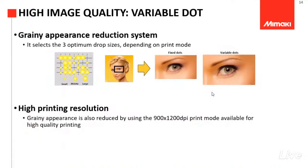Lalu selanjutnya ada fitur yang namanya variable dot. Variable dot ini berfungsi sebagai fitur untuk menghaluskan gambar. Jadi kalau printer-printer yang lama, biasanya masih pakai fixed dot. Fixed dot biasanya menghasilkan gambar yang kurang begitu halus. Dengan variable dot ini, dia bisa menghasilkan gambar yang lebih halus dan lebih tajam.